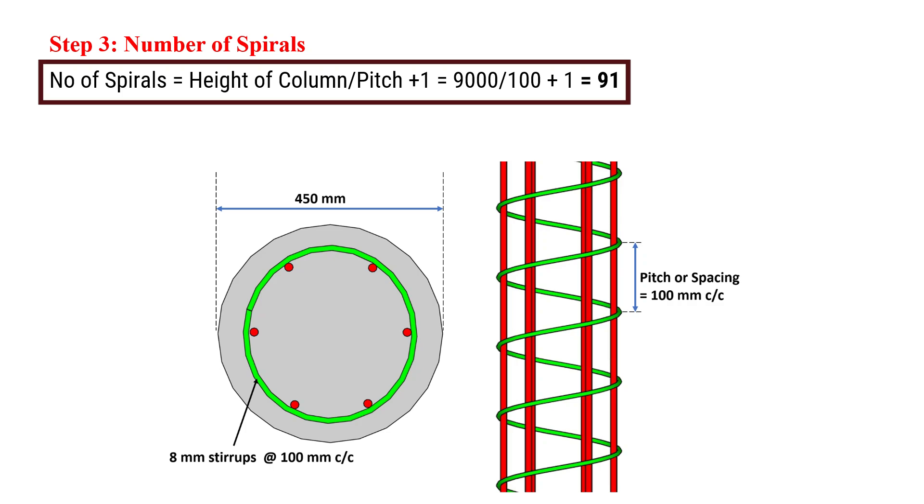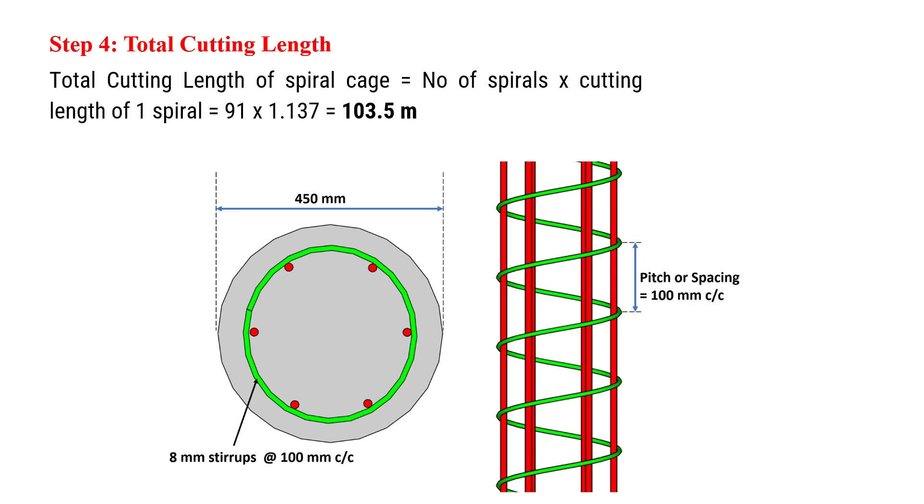Moving on to the final step in which we will calculate the total cutting length of the spiral cage. Total cutting length of the spiral cage will be number of spirals times cutting length of one spiral. Number of spirals is calculated as 91 and cutting length of one spiral is 1.137 meters.